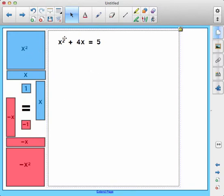So first, let's talk about how to build this equation using the algebra tiles. The equation is x² + 4x = 5. I'm using the blue tiles for positive numbers and the red tiles for negative numbers.